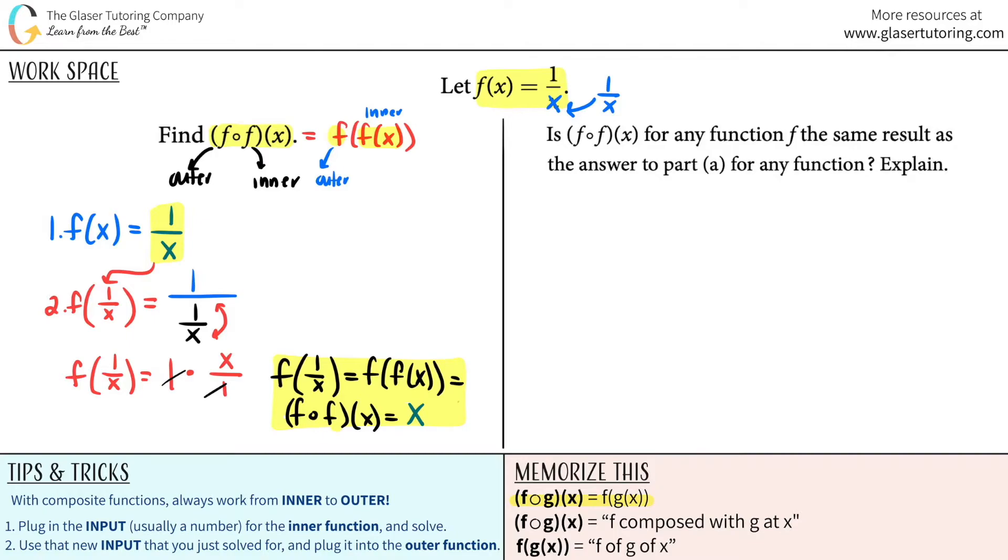Now they say, is f composed with f at x for any function, for any function f, the same result as the answer to part a for any function? Explain. I'm assuming that this is part a. So they're basically saying, this is a convoluting and confusing way of just saying, can I use any f of x value? Can I put in any f of x function